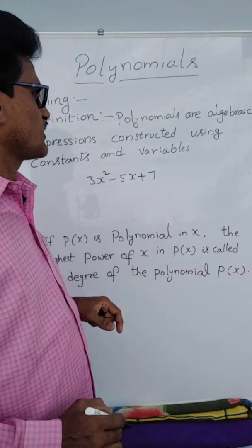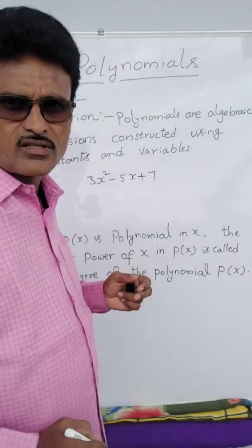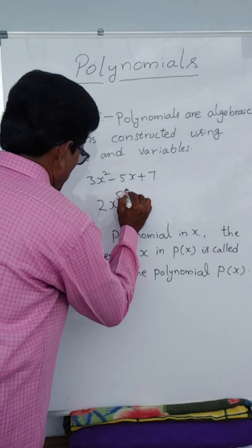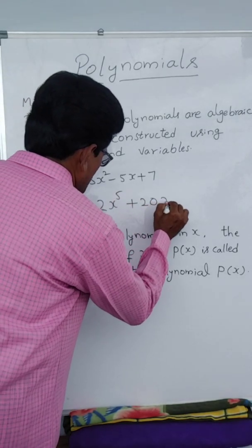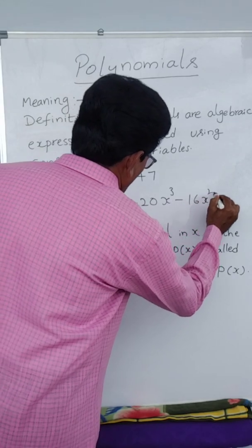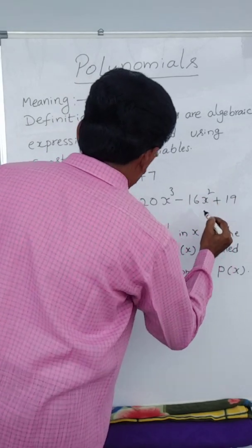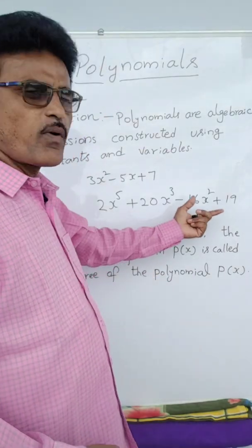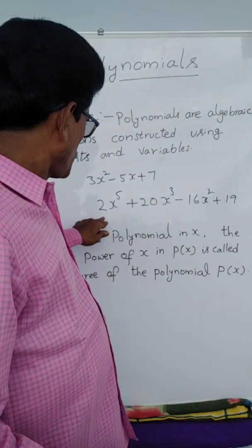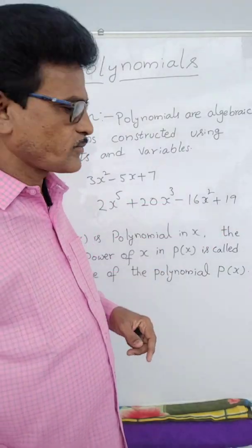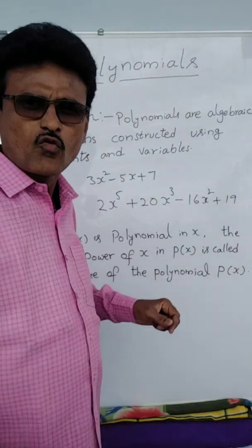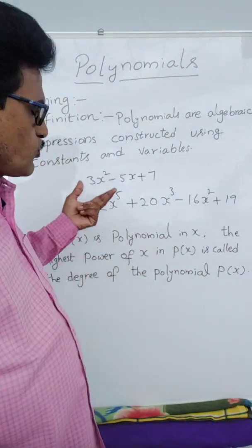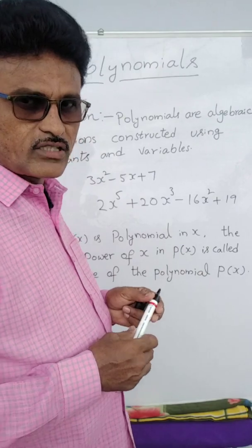In 3x² - 5x + 7 there are 1, 2, 3 terms. See one more example: 2x to the power of 5 plus 20x cubed minus 16x squared plus 19 — here 1, 2, 3, 4 terms are there. Here 2, 20, minus 16 are constant numbers and x is the variable. So there is no limit for number of terms — with one term, two terms, three terms, whatever it may be, we can construct polynomials.